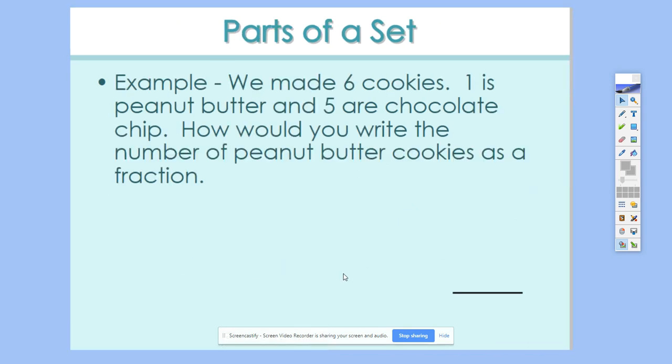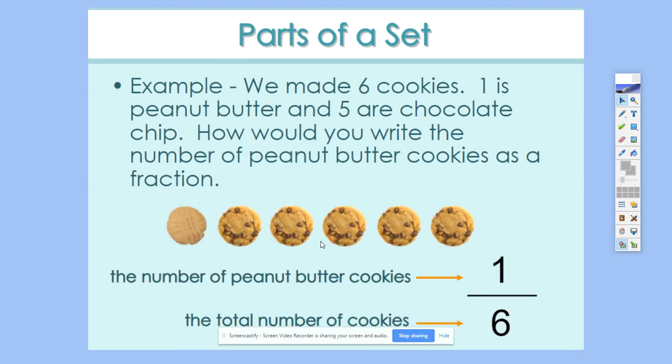So if we went into some examples, for example, this is a part of a set. How would we write this? Here's our problem. We made six cookies. One of them is peanut butter and five are chocolate chip. But how would you write the number of peanut butter cookies as a fraction? Think about that for a second. How many peanut butter cookies out of the six cookies are peanut butter? So let's draw a little picture here. Here's our six cookies.